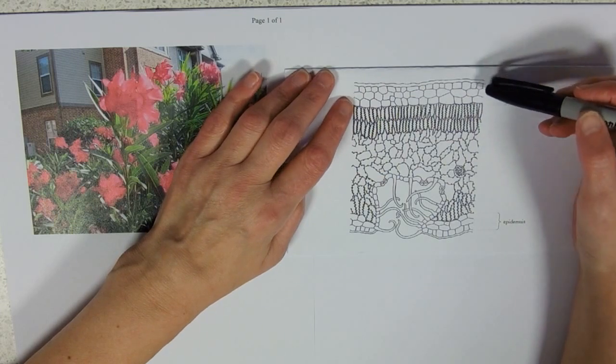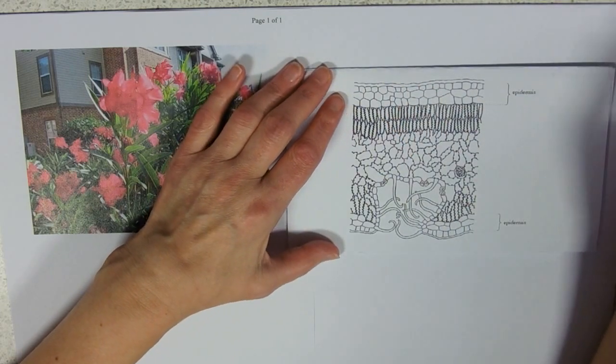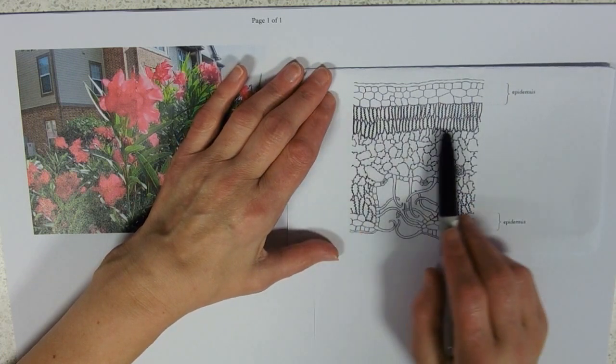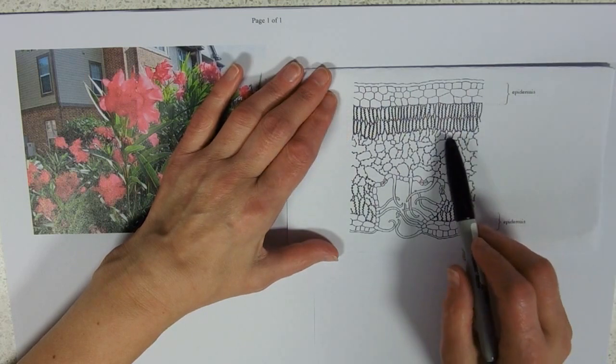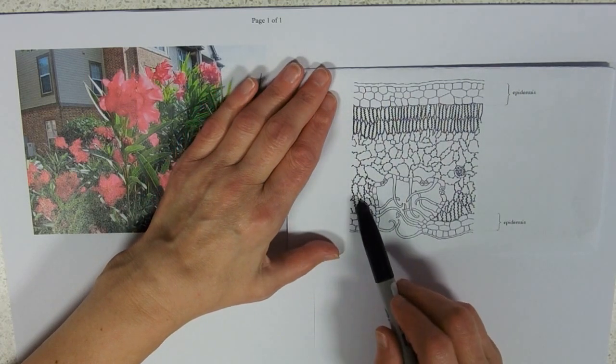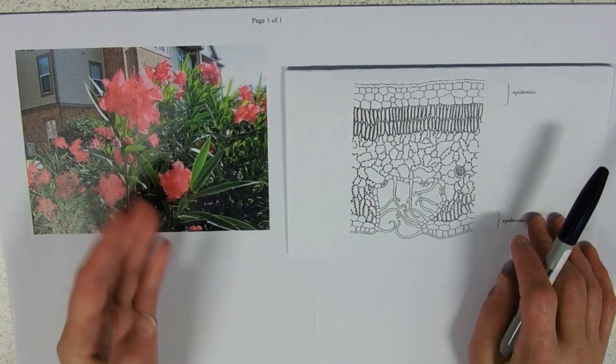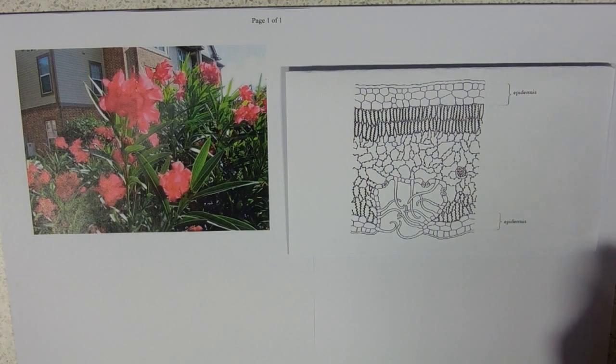Then we've got a layer of photosynthetic tissue, these long narrow palisade cells, and then underneath the spongy mesophyll and another layer of palisade cells there. So you can see these quite stiff leaves held quite upright.